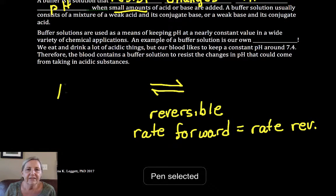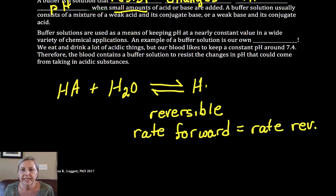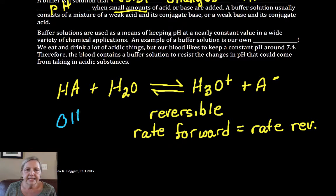So if I have one that is based on some generalized acid HA plus H2O makes H3O+ plus A-. Now if I add a little bit of base, the base will react with the acid and it will shift the reaction.